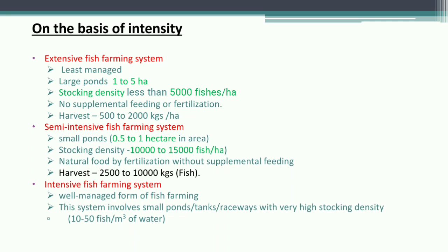Intensive fish farming is a well-managed system involving small ponds and tanks with very high stocking density of 10 to 50 fish per cubic meter of water. Supplementary feed is provided. Summary: extensive is least managed, large ponds, no feeding or fertilization; semi-intensive uses fertilization but no supplementary feed, small ponds (0.5–1 ha); intensive is fully managed with supplementary feed in small ponds, tanks, or raceways.